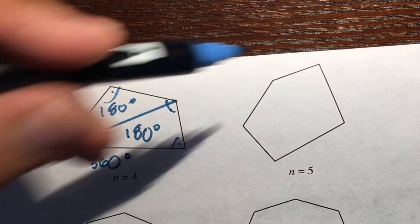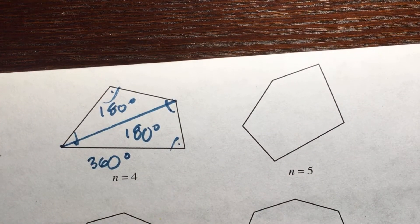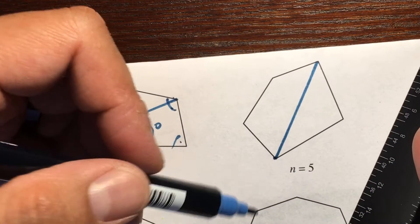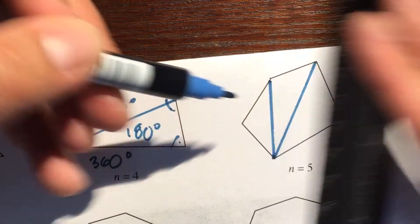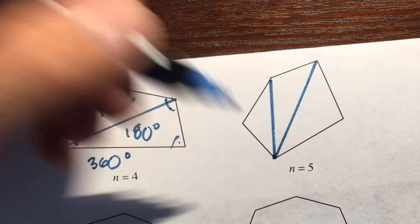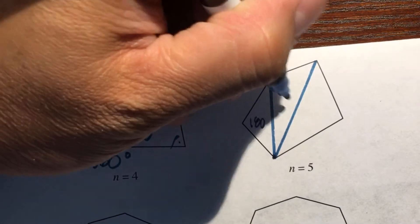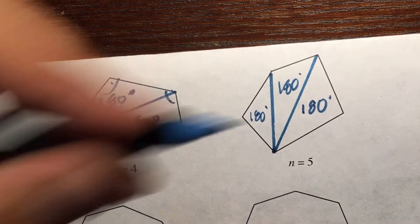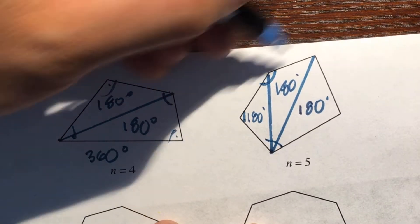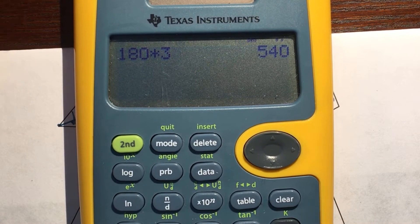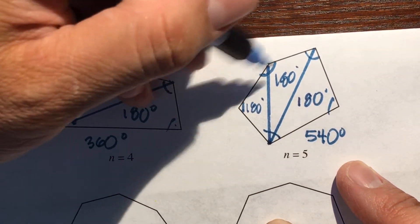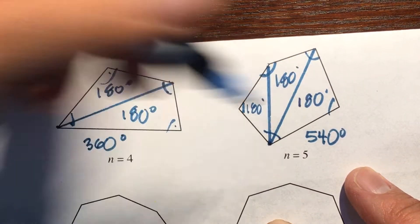Now let's look at a five-sided polygon, called a pentagon. We're going to pick one vertex and connect it to other open vertices. That creates three triangles. Each triangle sum theorem gives 180, so 180 times 3 would be 540. So the pentagonal sum theorem: all five angles add up to 540 degrees. Do you see a pattern yet?